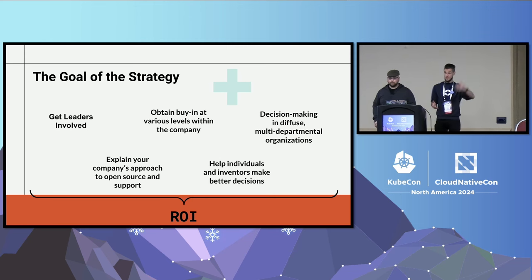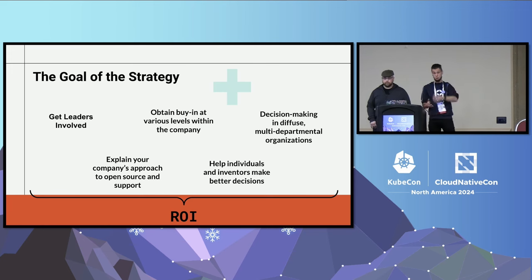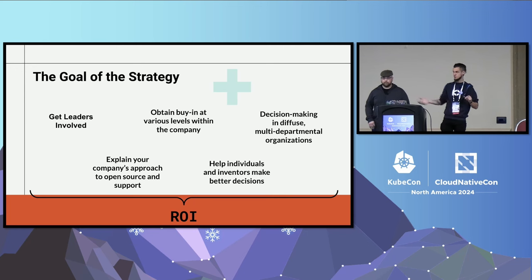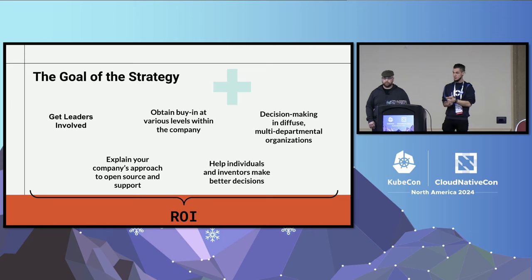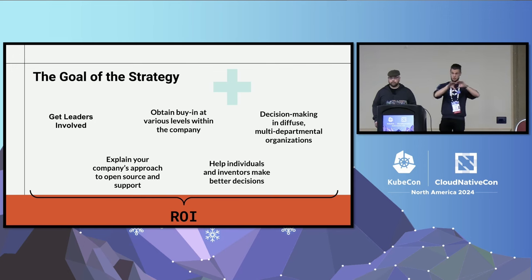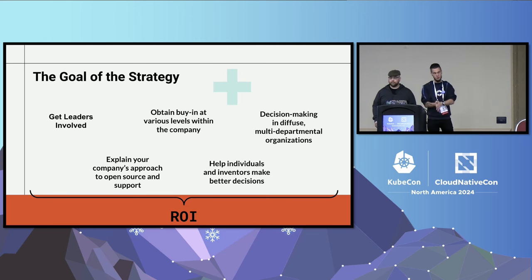We basically need an open source strategy for every company working in open source. The most important thing is getting the leadership team involved. We also need to explain to the outside world and inside the company what our open source strategy is, and talk to all the different departments — marketing, HR — to get buy-in so the whole company sees there's value in working with open source.